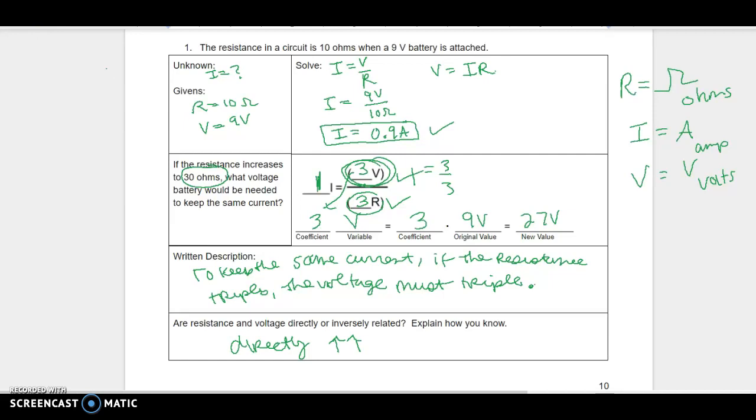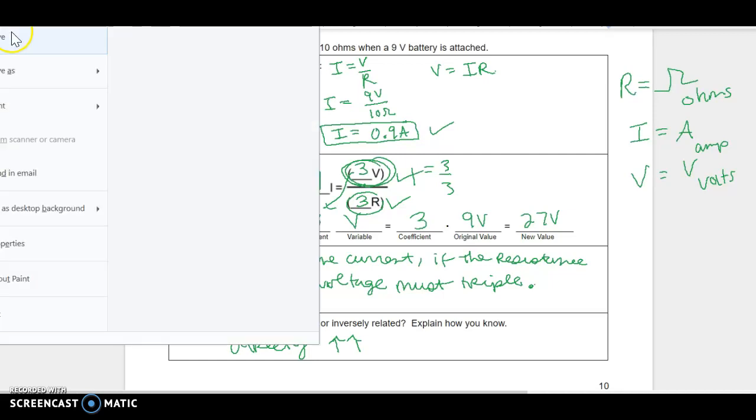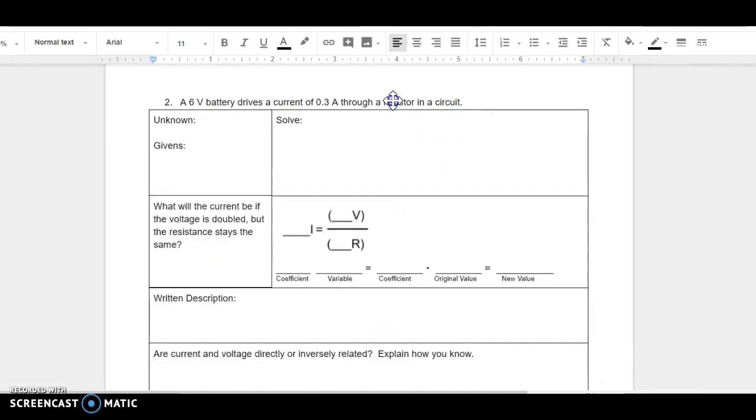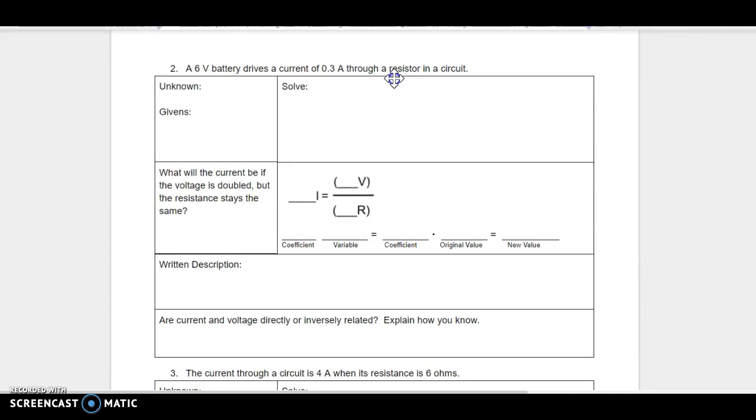All right, so let's do another one. Number two. Okay. All right, let's see this one. All right. A six-volt battery drives a current of 0.3 amps through a resistor in a circuit. Fatter pen here. Let's try another color.